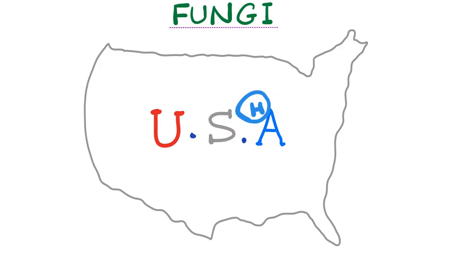That's why we see cases of histoplasmosis among spelunkers — people who explore caves, and caves contain bats. Histoplasmosis can lead to granuloma formation and inflammation. This granuloma has caseating necrosis, similar to the granuloma of tuberculosis. The granuloma may have dystrophic calcification. Calcification can appear not only in the lungs but also in the spleen, since this is a systemic mycosis.